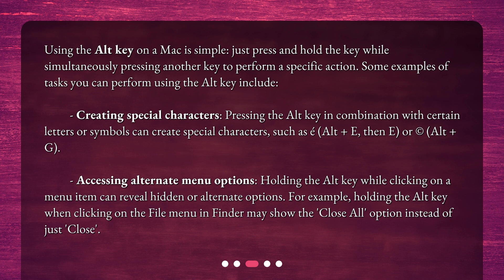Some examples of tasks you can perform using the Alt key include creating special characters. Pressing the Alt key in combination with certain letters or symbols can create special characters, such as Á (Alt + E, then E) or the copyright symbol (Alt + G).